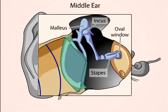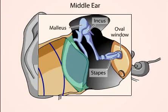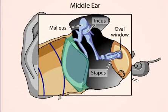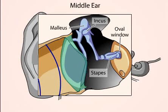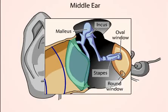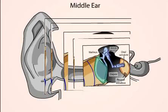Because the entire structure is filled with non-compressible fluid, movement within the cochlea in response to a push on the oval window requires the presence of a movable outlet membrane. This membrane is the round window, which separates the scala tympani from the middle ear.